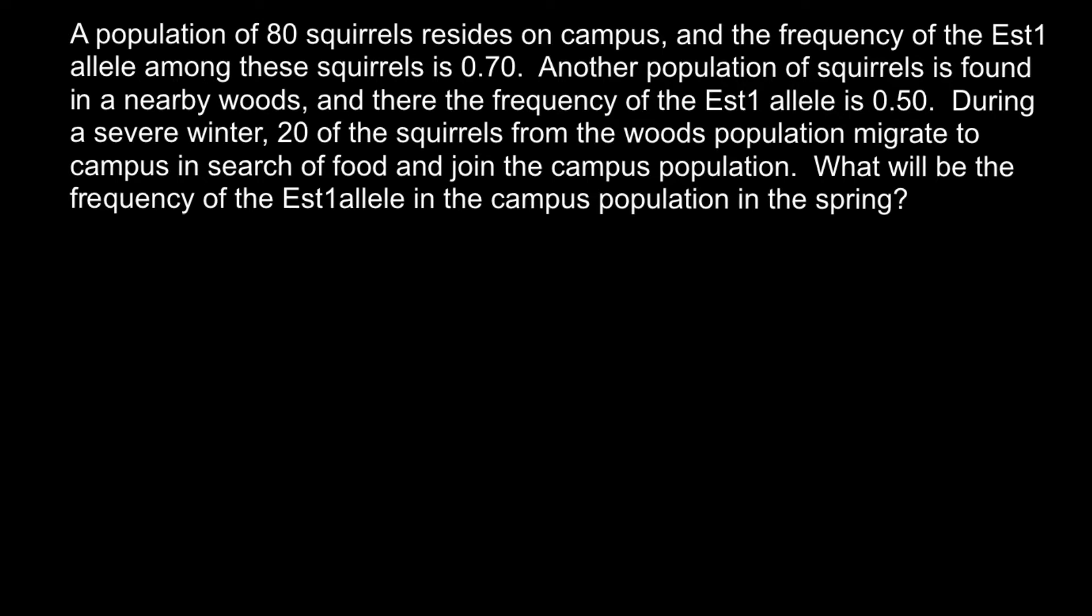So basically, we have here two populations. Let's say this circle would be one population, the population on the campus with the frequency of the EST1 allele which is equal to 0.7. And we also have another population in the woods with a frequency of the same allele which is equal to 0.5.